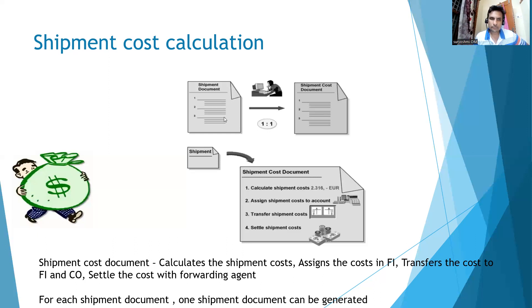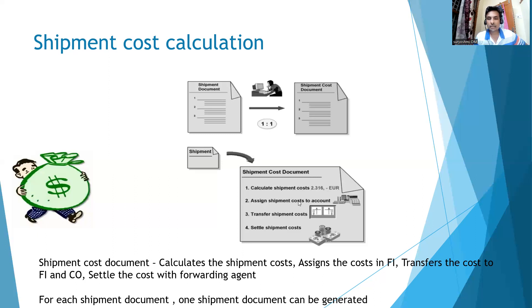The shipment document and shipment cost document are interlinked. For the shipment cost document, the preceding document is the shipment document — without a delivery, no one is going to create the cost. For example, the shipment cost is calculated at 2,314 euros. This cost will be assigned to an account. This is an FI, MM, and SD integration — transfer of shipment costs will settle the cost to the respective vendor.